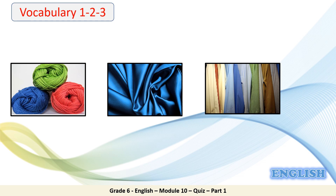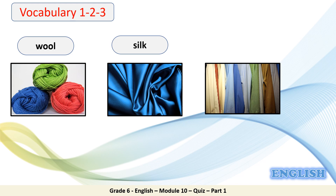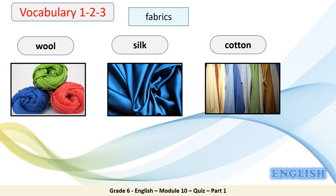The first word is wool. Please repeat: wool. The next word is silk. Silk. And the last word is cotton. Cotton. All three words — wool, silk, and cotton — we call them all together fabrics. They are all fabrics, different types or kinds of fabrics.